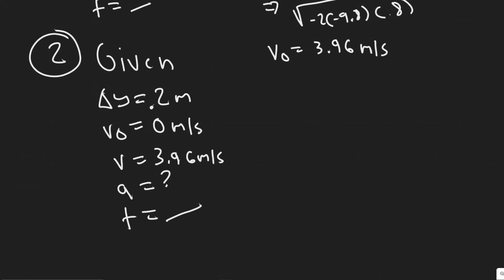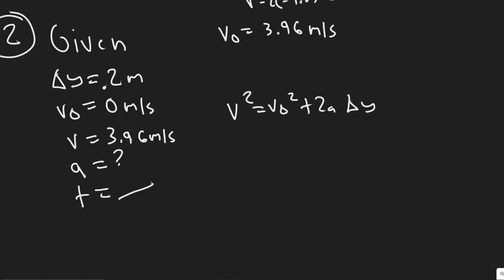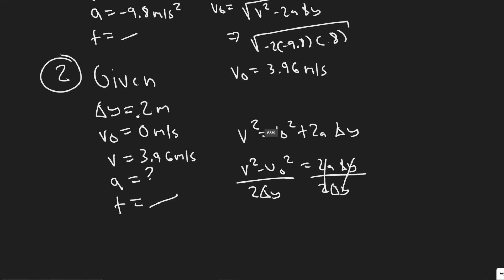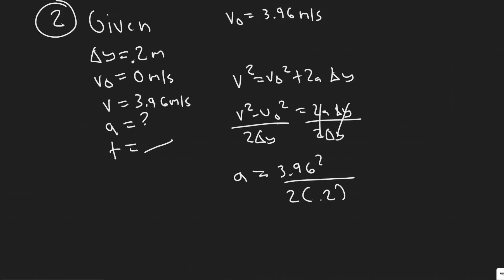Now that we have this information, we can solve for acceleration over this interval using the same formula: V² = V₀² + 2a·Δy. Rearranging: a = (V² − V₀²) / (2·Δy). Plugging in: a = (3.96² − 0²) / (2 × 0.2). That gives an acceleration of 39.2 meters per second squared.